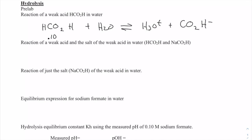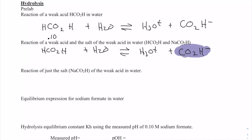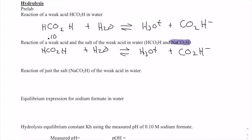We also saw that we could have the same reaction, but we could also start with some of the common anion. This is the common anion formate — it's also known as the conjugate base of formic acid. We could add sodium formate, and instead of starting with just the acid and no salt, no conjugate base, we could start with the acid and have an equilibrium with the conjugate base.